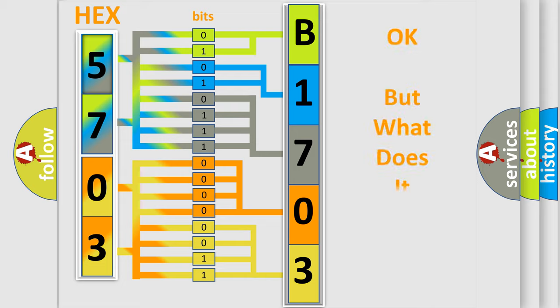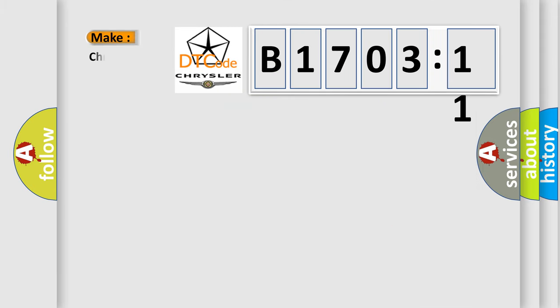We now know in what way the diagnostic tool translates the received information into a more comprehensible format. The number itself does not make sense to us if we cannot assign information about what it actually expresses. So, what does the diagnostic trouble code B170311 interpret specifically for Chrysler car manufacturers?